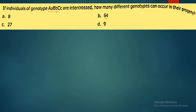If an individual has genotype A, B, C — meaning there are 3 heterozygotes — and they are intercrossed, how many different genotypes can occur in their progeny? The formula for genotype is 3 raised to n. With n equal to 3, we get 3 into 3 into 3, which equals 27. So the correct option is option C.